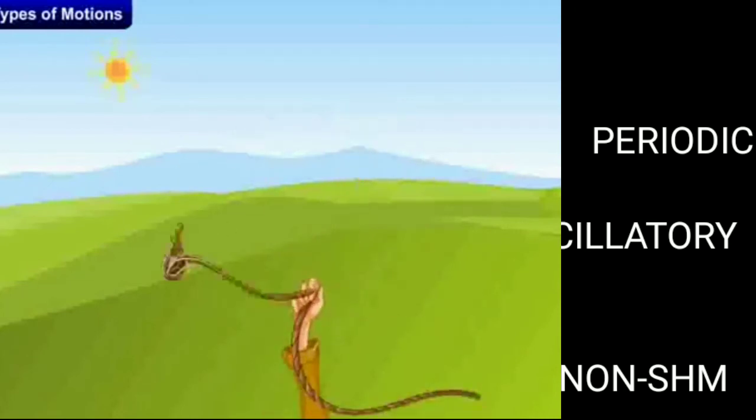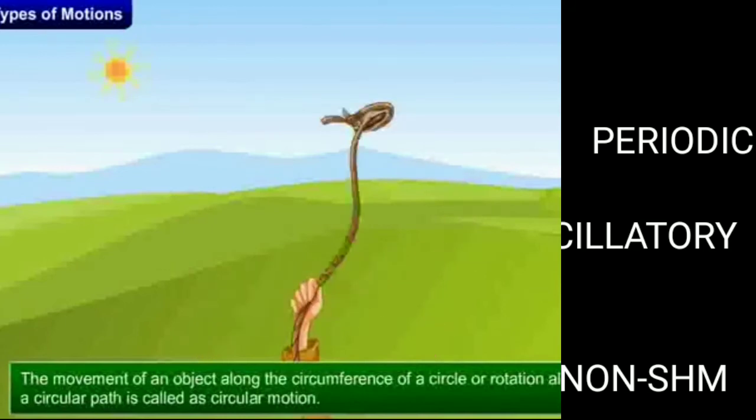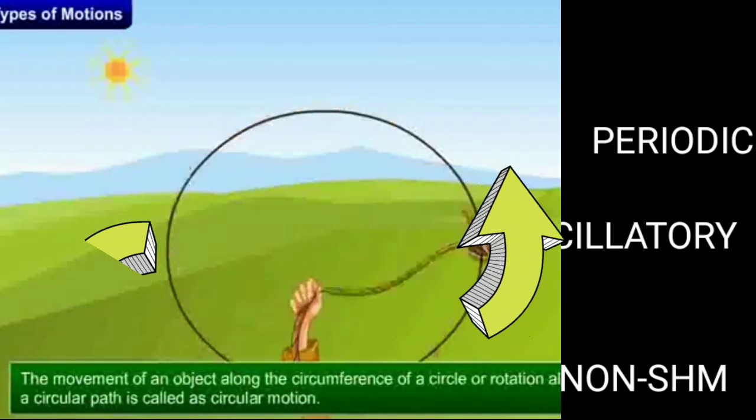In periodic motion, if a body repeats its path after some interval of time, that type of motion we call periodic motion. Examples include a pendulum or a clock — the same path is repeated again and again with respect to time. In non-periodic motion, the object does not repeat its path but continuously changes its path with respect to time, such as straight-line motion or projectile motion.